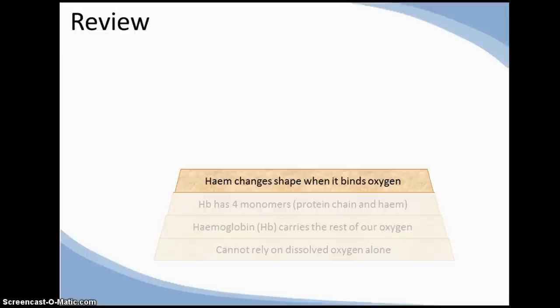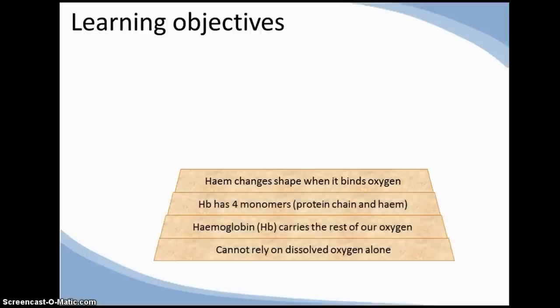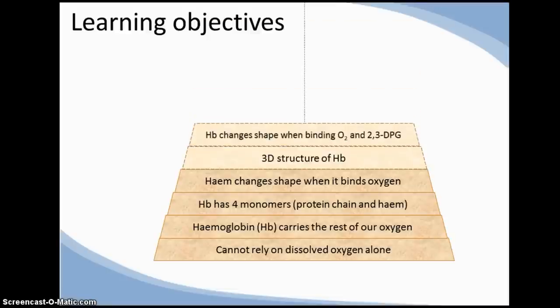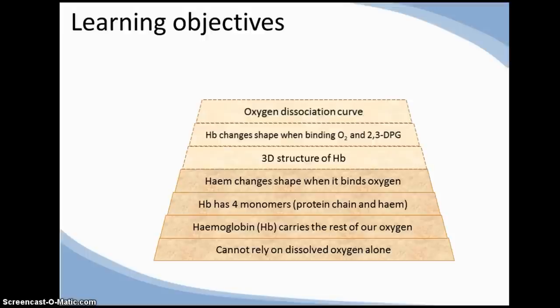Looking forwards, we're going to discuss the three-dimensional structure of haemoglobin in more detail. We'll discuss how this shape changes when oxygen and a compound called 2,3-DPG bind. And we'll describe the relationship between the partial pressure of oxygen and the loading and unloading of haemoglobin. We'll also talk about what happens when this relationship is exposed to different physiological environments.